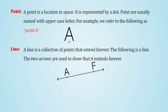Line: A line is a collection of points that extend forever. The following is a line. The two arrows are used to show that it extends forever.